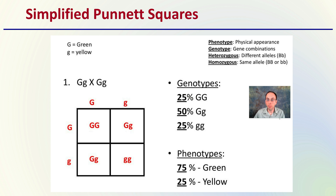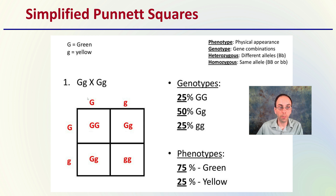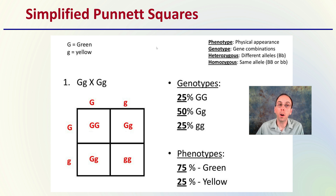A simplified Punnett square — this may take you back to biology class — is a quick way to organize the crossing of two genotypes together. The big G would be dominant over the little g. With a heterozygous cross — a dominant and recessive allele bred with a dominant and recessive allele — 25% would be homozygous dominant, 50% would be heterozygotes, and 25% would be homozygous recessive. Phenotypically, 75% would be green if capital G represents green, and 25% would be yellow because they need to inherit both of those recessive genes.